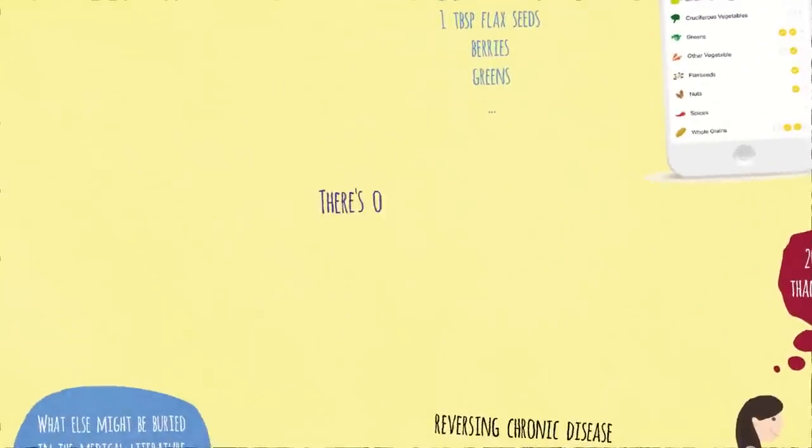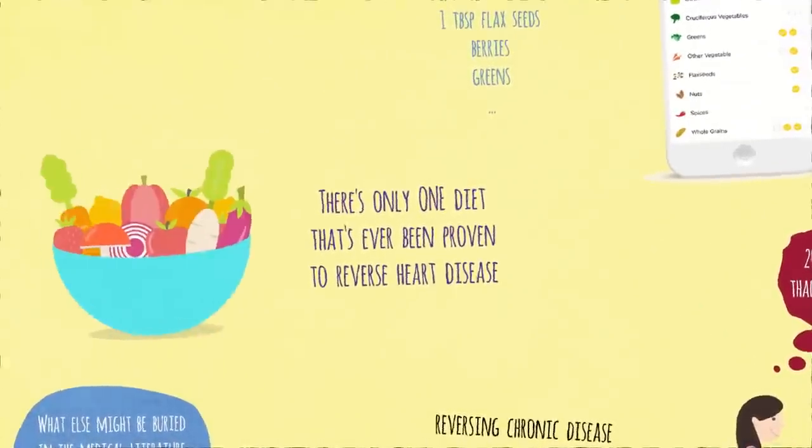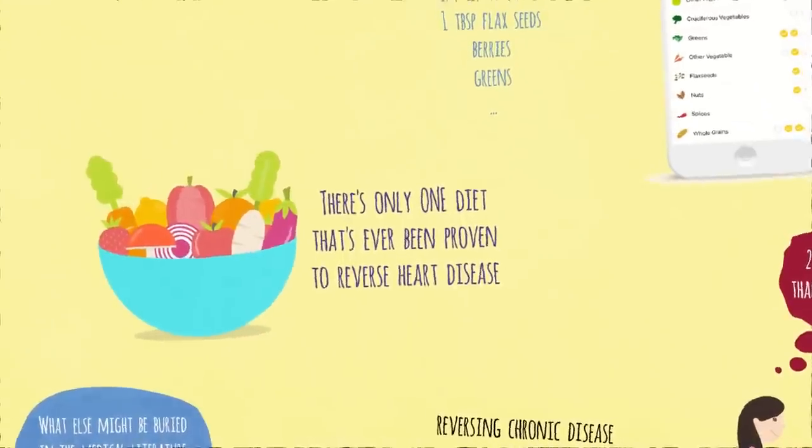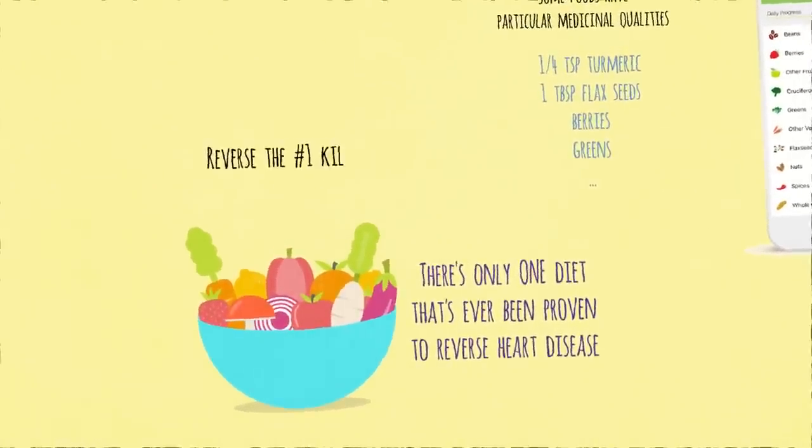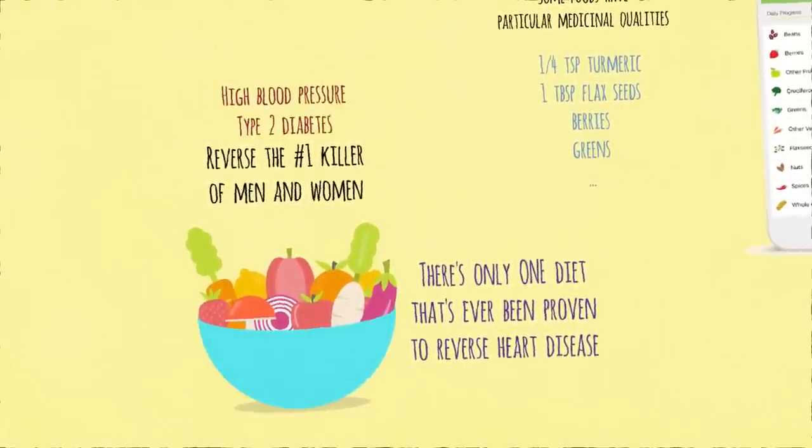There's only one diet that's ever been proven to reverse heart disease in the majority of patients, this plant-based diet. If that's all a plant-based diet could do, reverse the number one killer of men and women, shouldn't that be the default diet until proven otherwise? And the fact that it can also be effective in treating, arresting, and reversing other leading killers like high blood pressure and type 2 diabetes would seem to make the case for plant-based eating simply overwhelming.